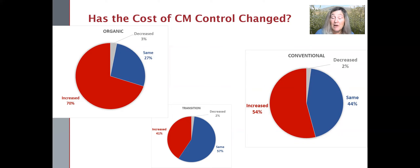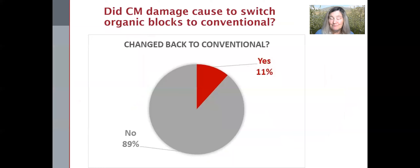And it's likely some combination of the two. So it's safe to say that almost no one thinks the cost of control is going down. Another indicator of pretty extreme pressure is if you felt damage was so high in your organic block that you had to switch it back to conventional to clean it up.